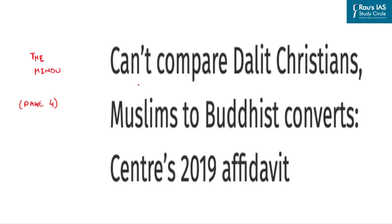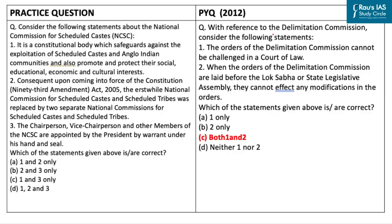The last question of the day talks about the issue of Dalit Christians and Dalit Muslims being treated as Scheduled Castes, a matter currently sub judice. UPSC in previous years has asked questions related to various commissions — whether the Election Commission or Delimitation Commission, which was asked in 2012. So the topic of commissions becomes important for us.